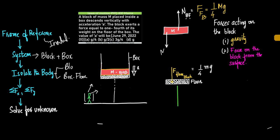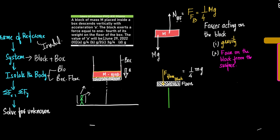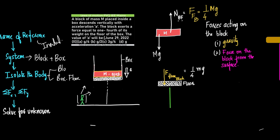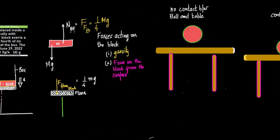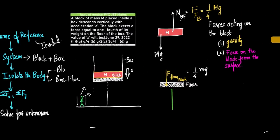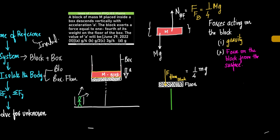What are the various forces acting on this block? Number one is gravity, resulting in Mg downward. Second is the force on the block from the floor surface, which is equal and opposite to the force on the floor by the block — given as one-fourth of its weight. Now, for this block, let us write sigma Fy = capital M times A.